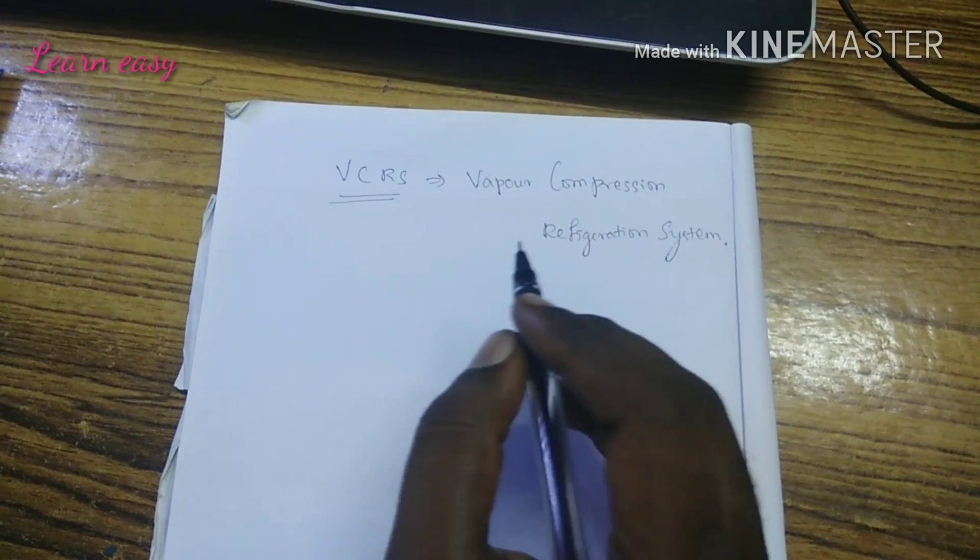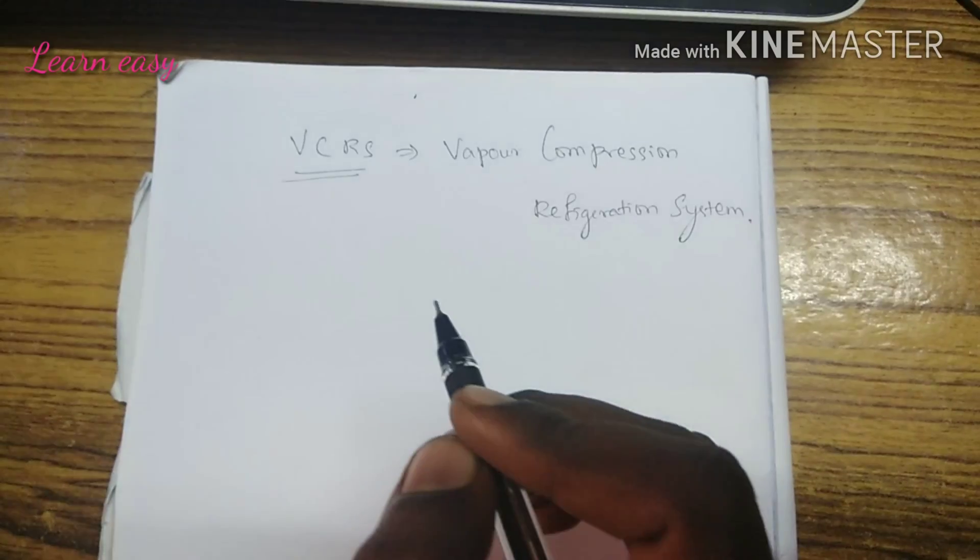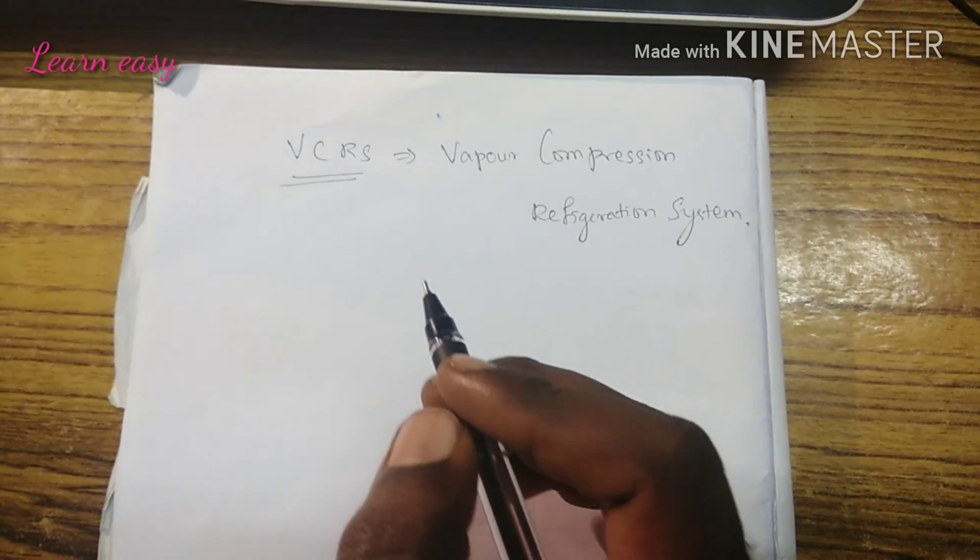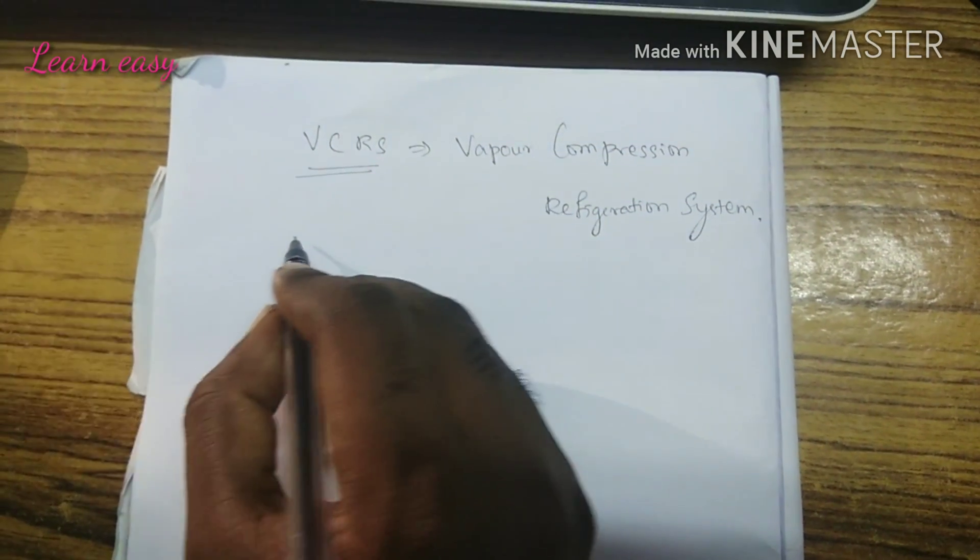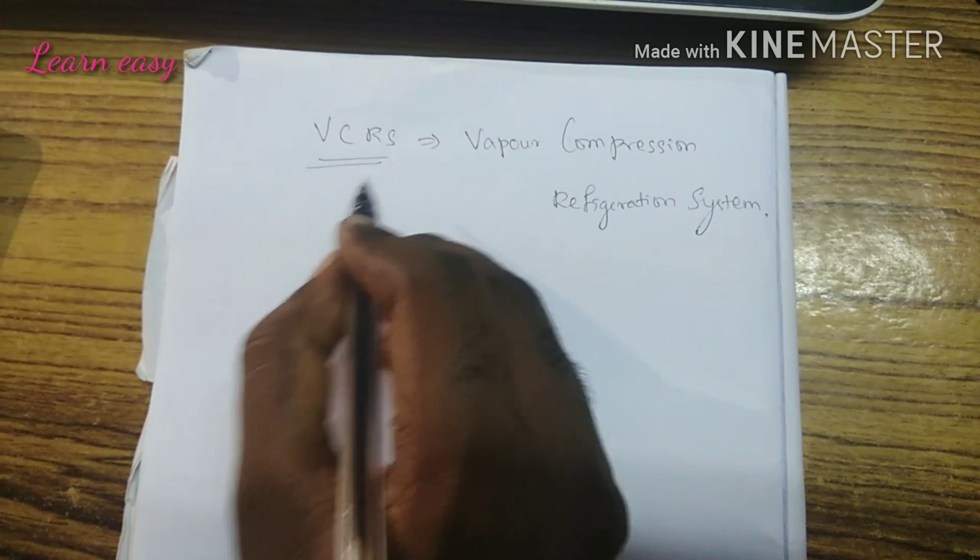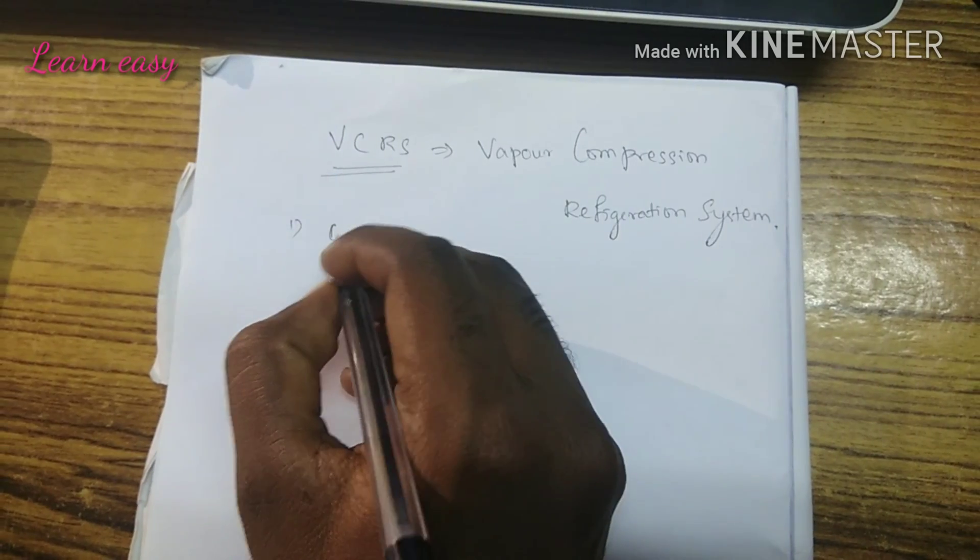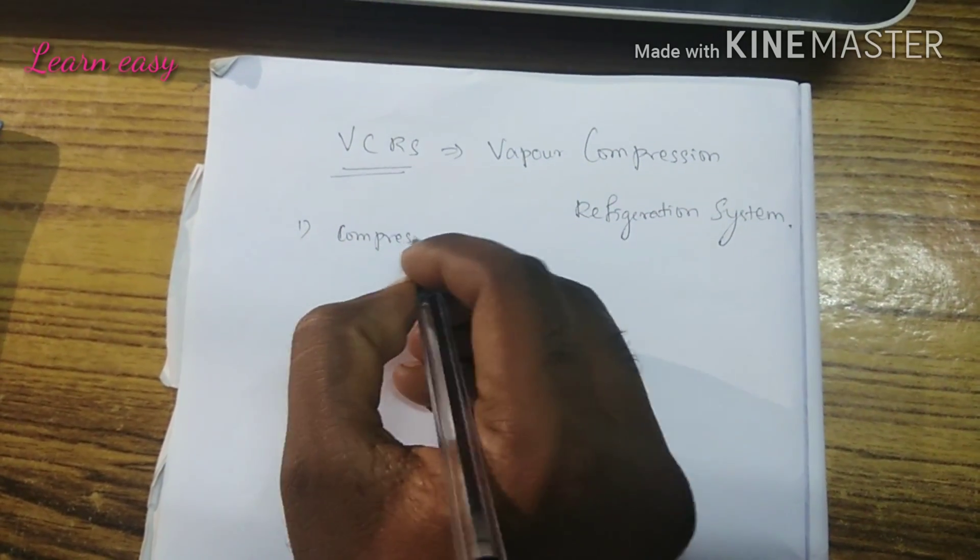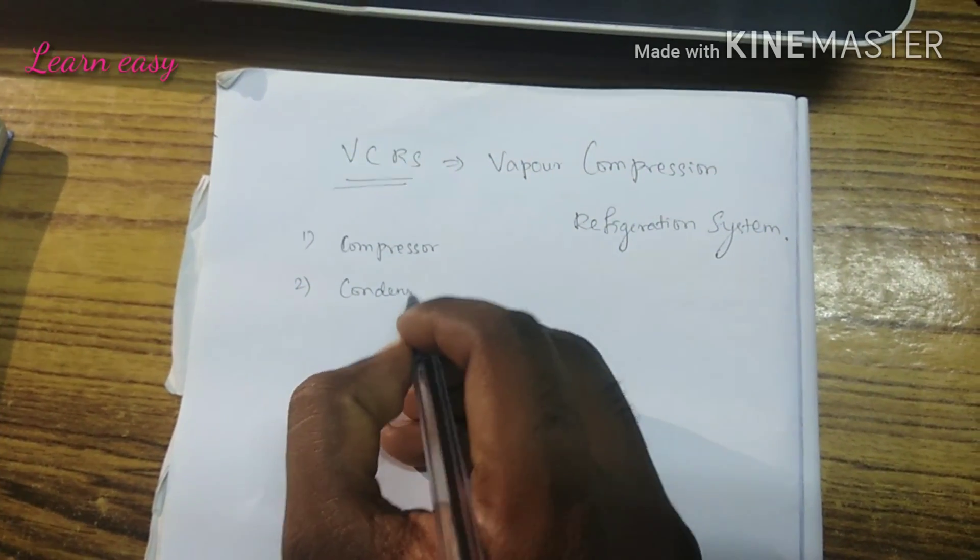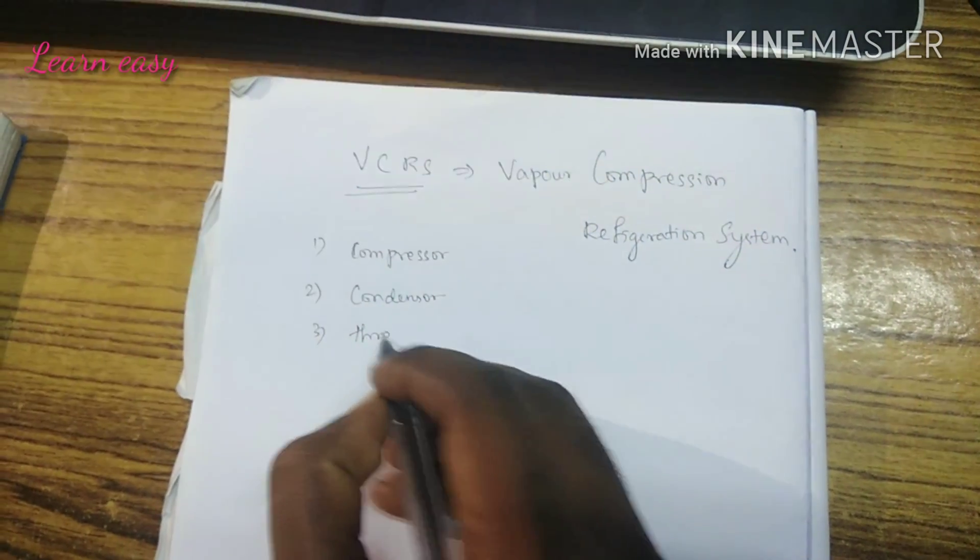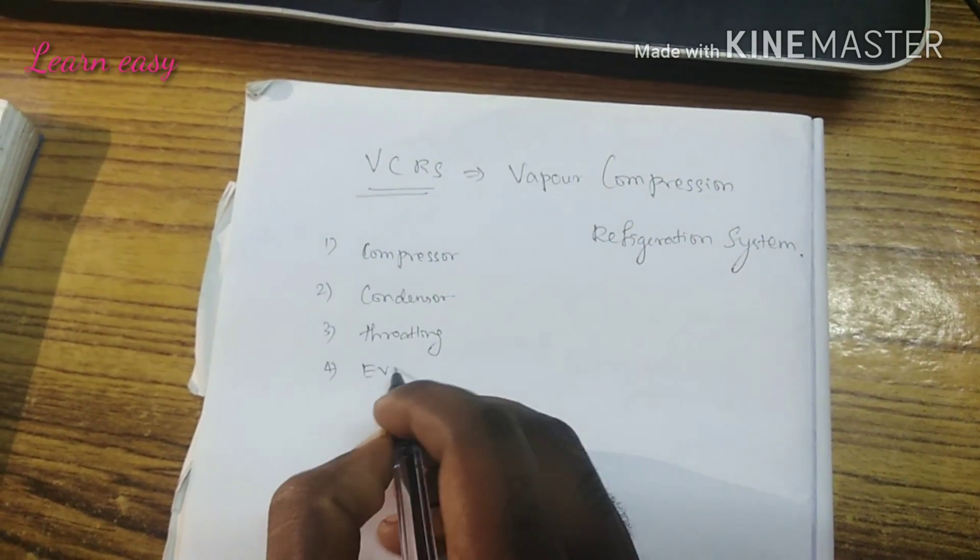The Vapor Compression Refrigeration System contains four basic parts: first is the compressor, second is the condenser, third is throttling, and fourth is the evaporator.